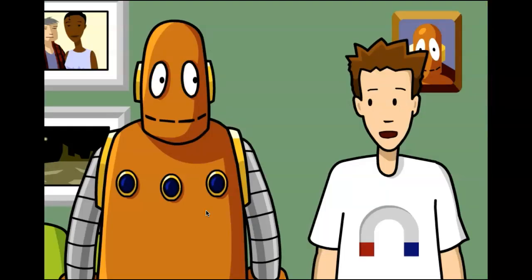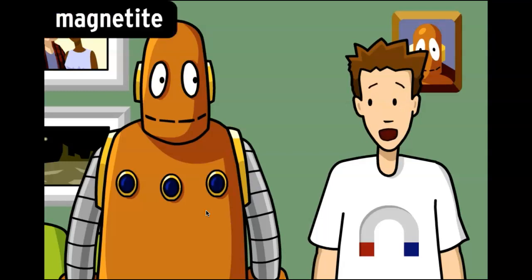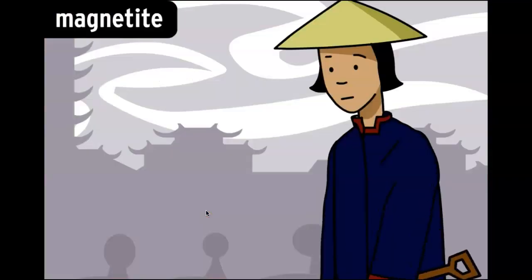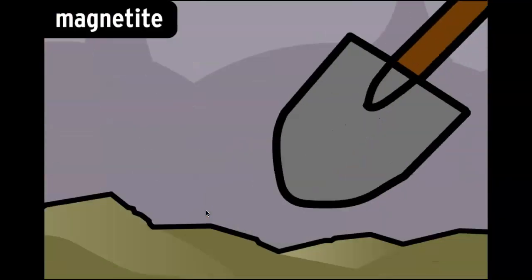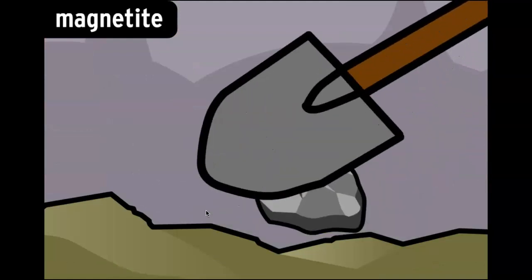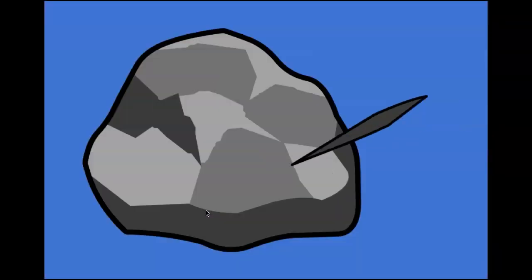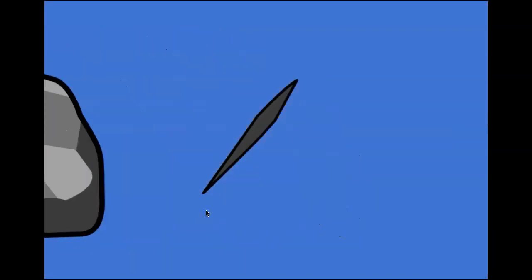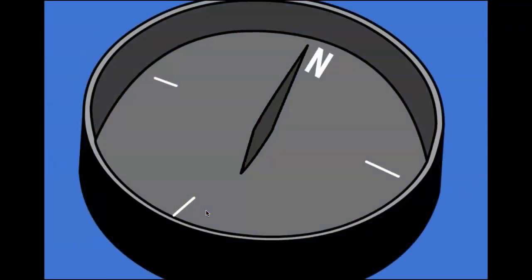Oh, magnets get their name from a type of iron ore called magnetite. Thousands of years ago, people in ancient Greece and China noticed magnetite's strange properties. When small pieces of iron were rubbed against it, those pieces would start to act kind of funny. When the pieces were free to turn, one end always pointed north.